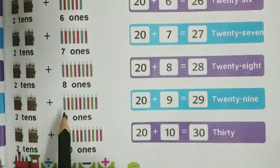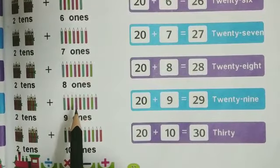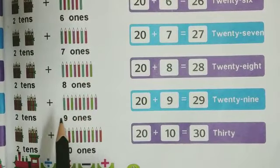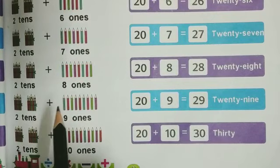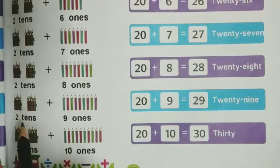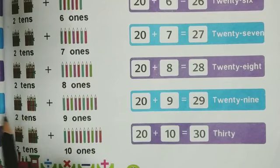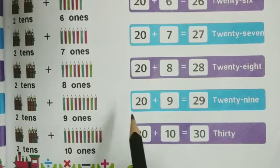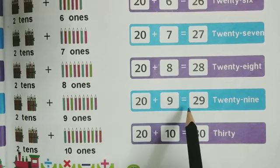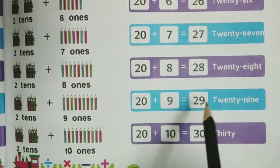We will move further: one, two, three, four, five, six, seven, eight, nine — 9 ones means 9 objects or 9 pencils — plus 2 tens means 20 pencils or 20 objects. We will add them: 20 plus 9 equals to 29.